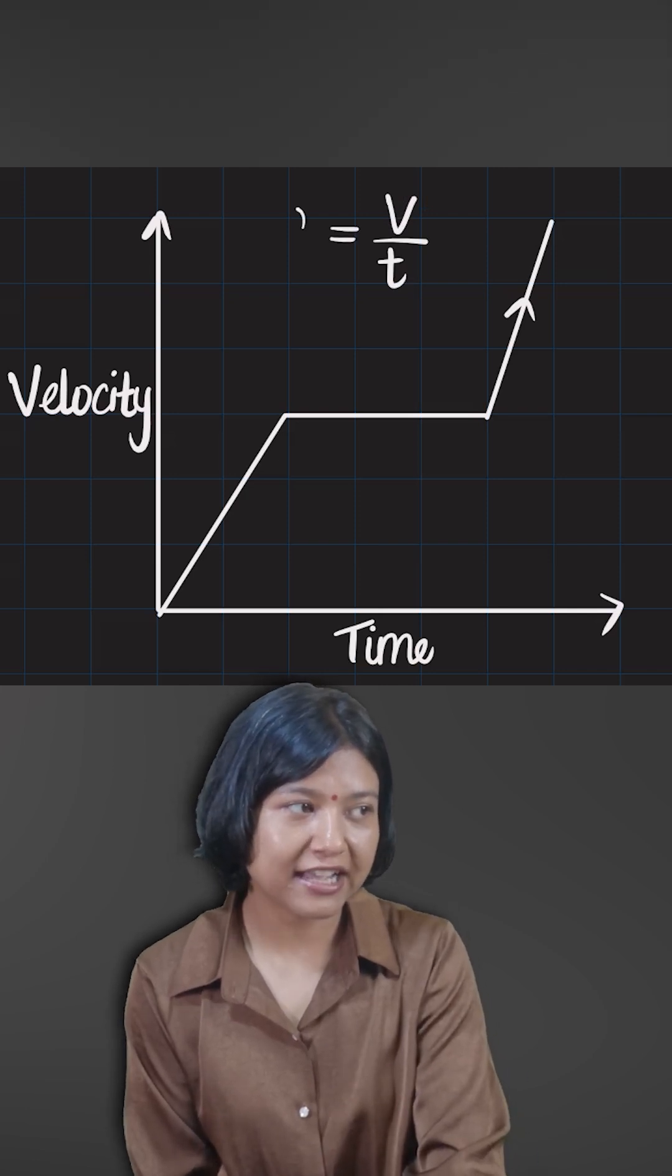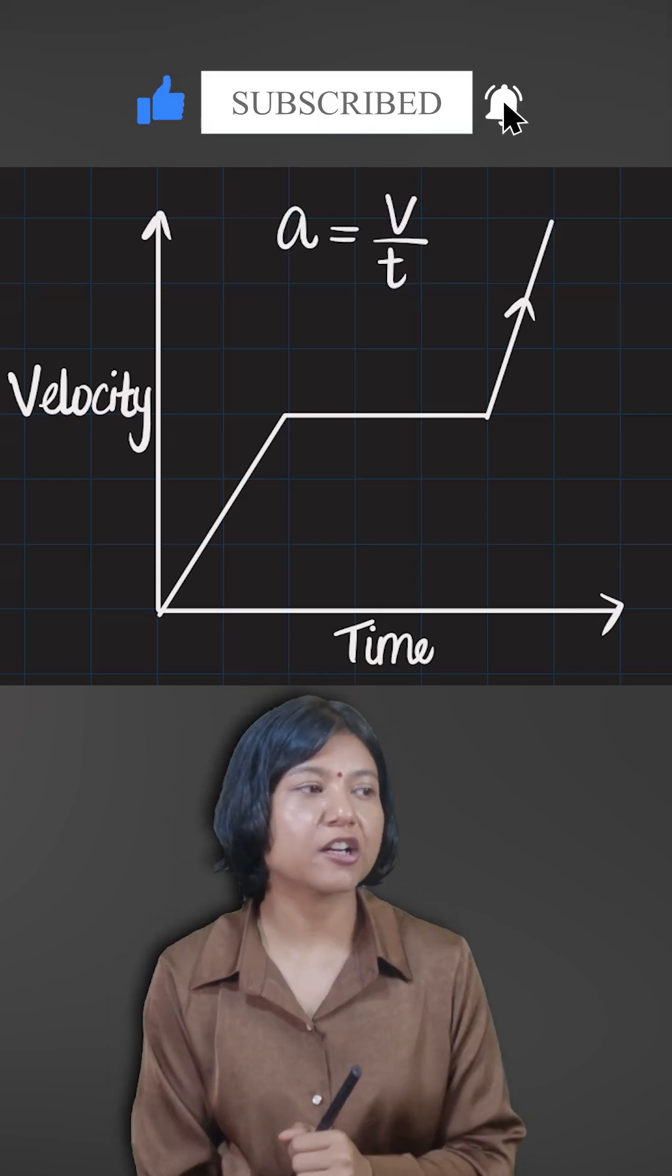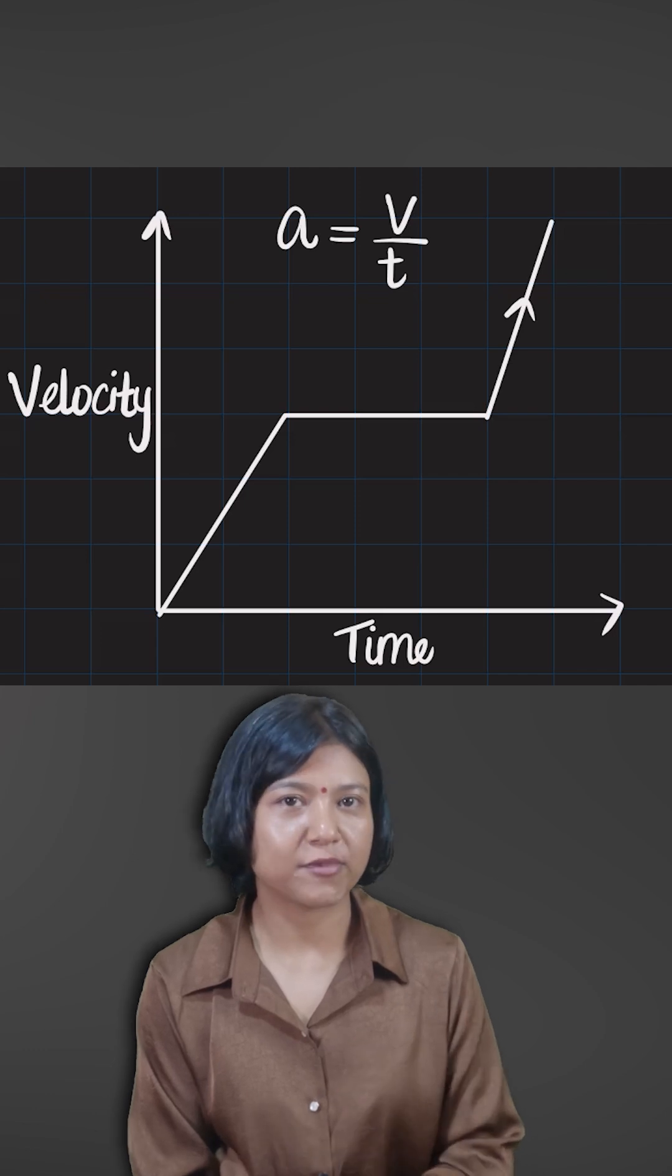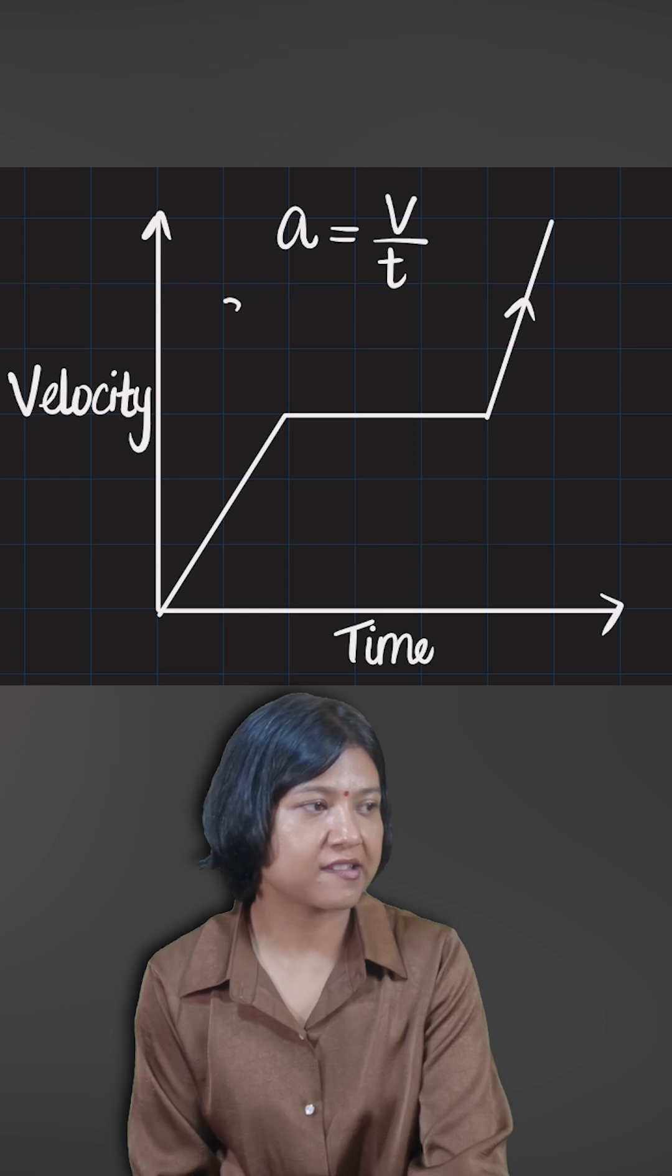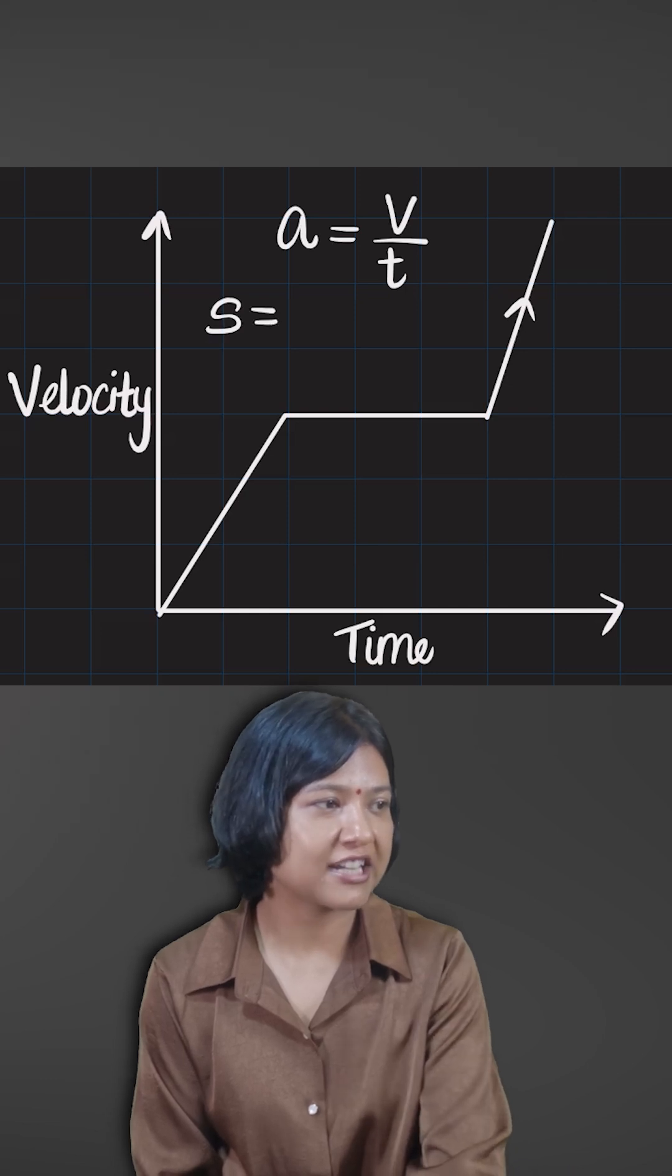But if you talk about finding the distance from here, what do you do? Try to recall: finding the distance, distance or displacement, is simply the product of velocity and time. So in that case, you must have learned that to find the distance or the displacement, we find the area.